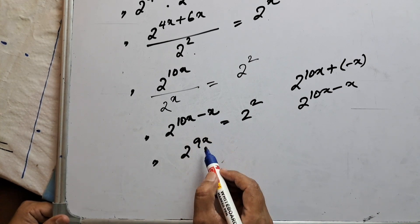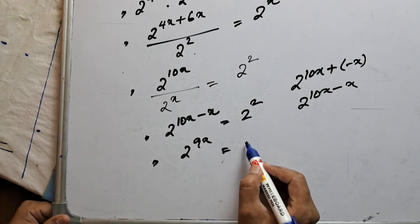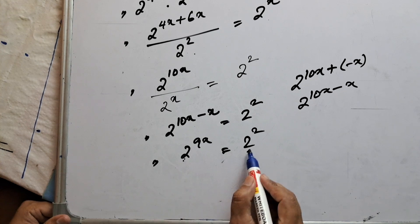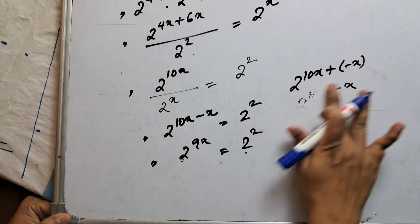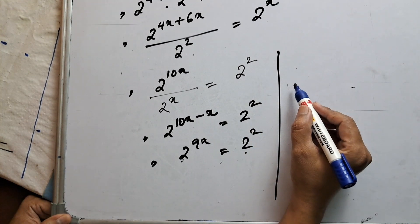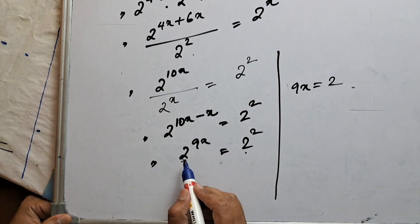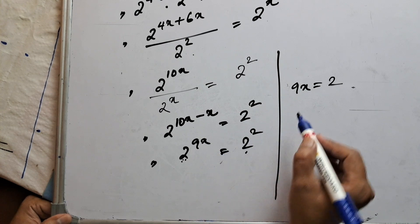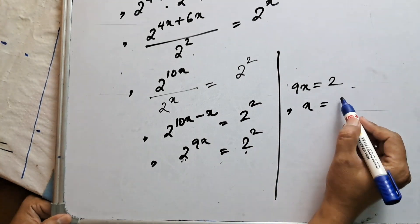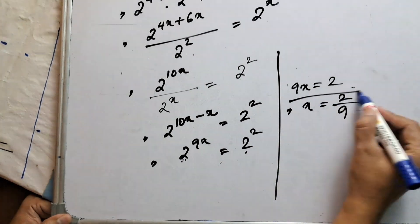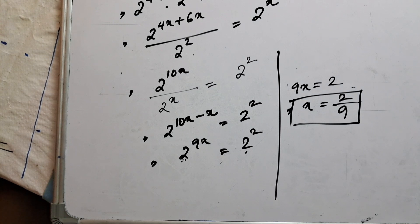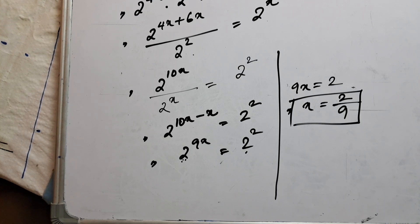2 to the power 10x minus x is 2 to the power 9x, equal to 2 squared. Since the bases 2 and 2 are equal, their powers are also equal: 9x equals 2, so x equals 2 over 9. We were asked to find the value of x and we got x equals 2/9. Key rules: when moving numbers between numerator and denominator the sign of the power changes; when bases are equal their powers are equal.